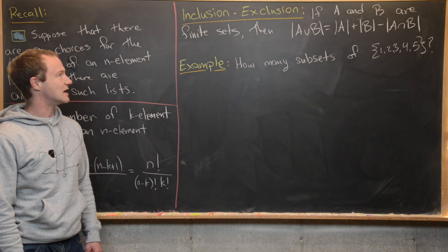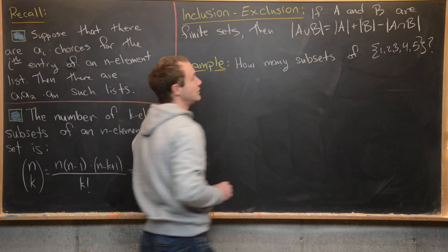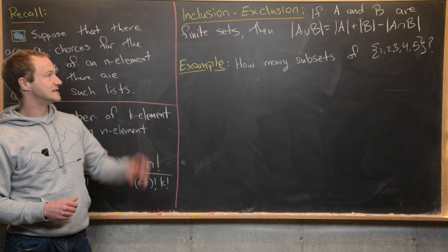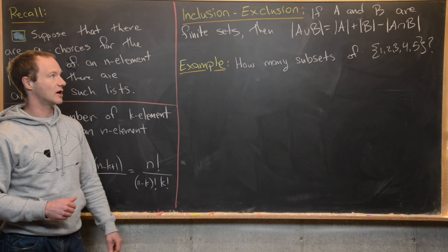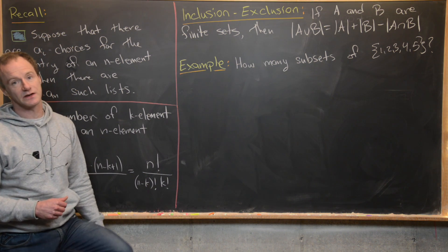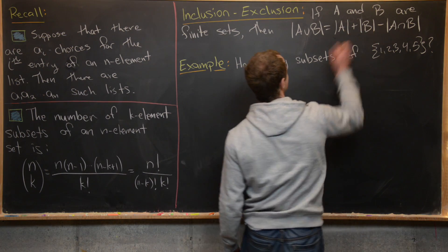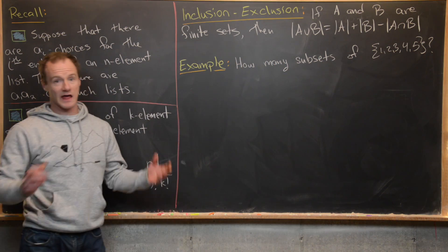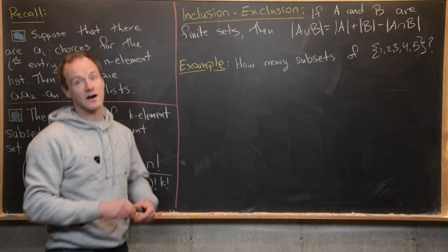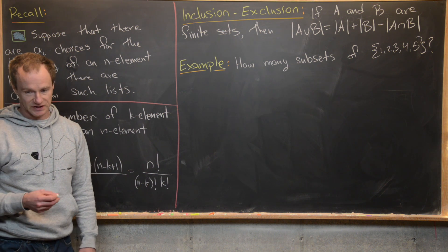If A and B are finite sets, then the cardinality of A union B equals the cardinality of A plus the cardinality of B minus the cardinality of A intersect B. When we count up the elements in A and B we've double-counted the elements in both, so we need to subtract off one of those countings — that's what subtracting the intersection does.